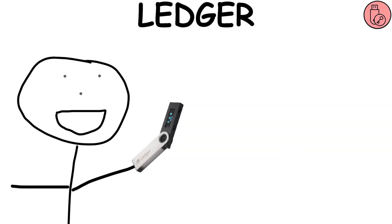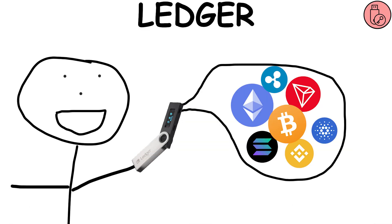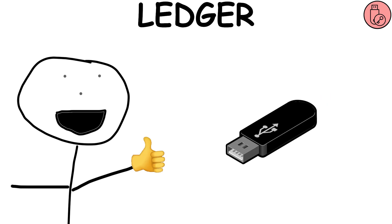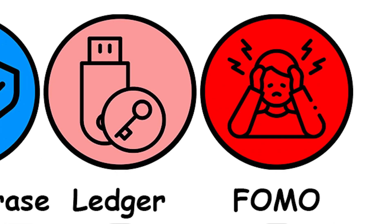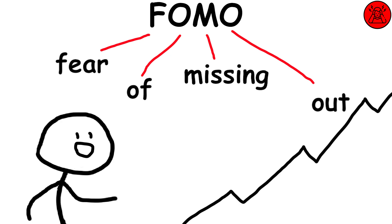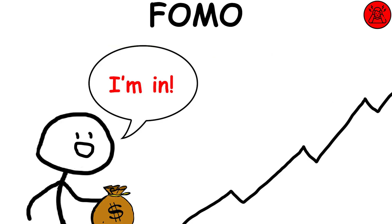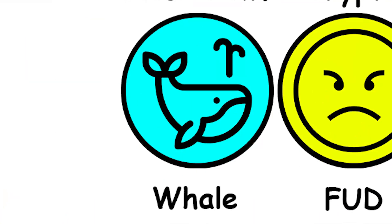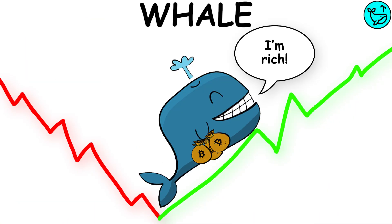Ledger: it is a hardware wallet that allows you to store all your cryptocurrencies in a secure way, similar to a USB stick. FOMO: it is the fear of missing out on a market movement, generally bullish, which often leads to poorly thought out operations or late purchases when the movement has already occurred. Whale: a whale is a loose slang term used to describe big players in the cryptocurrency markets.